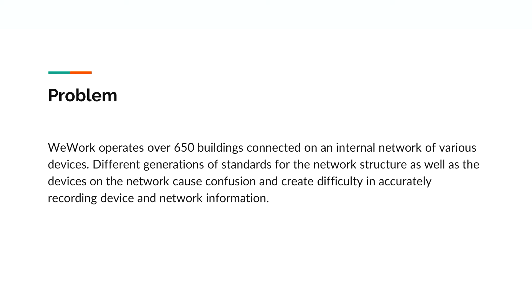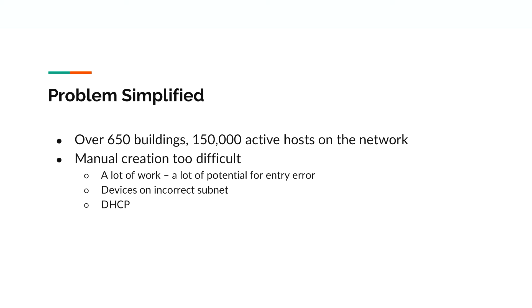Defining the problem from early monitoring at WeWork: WeWork has over 650 buildings connected on an internal network, each with various devices. Different generations of standards for the network structure and devices cause confusion and difficulty in accurately recording device and network information. Manual creation is too difficult — it involves a lot of work with potential for entry error, devices on incorrect subnets that would be missed, and devices potentially on DHCP.